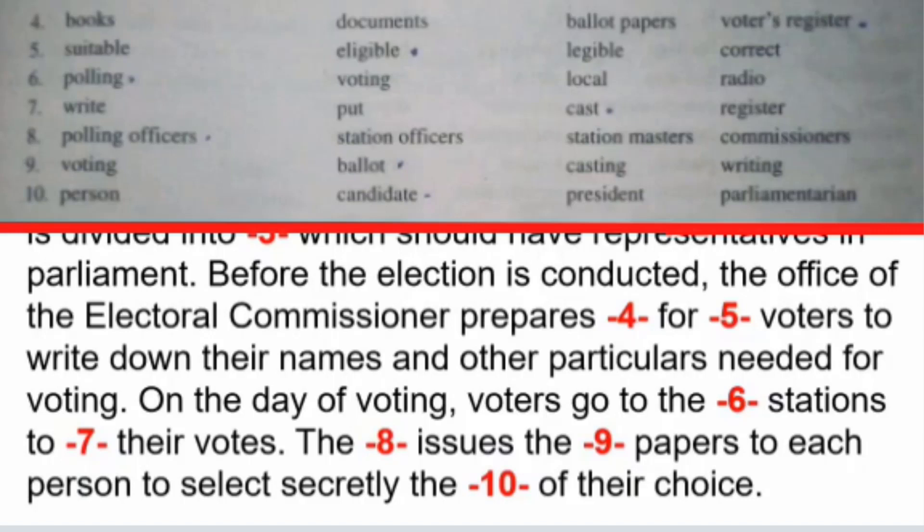To select secretly the DASH of their choice — options: A. the person of their choice, B. the candidates of their choice, C. the president of their choice, D. the parliamentarian of their choice. The correct answer is B — to select secretly the candidates of their choice.